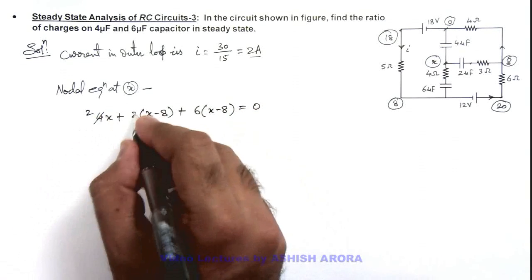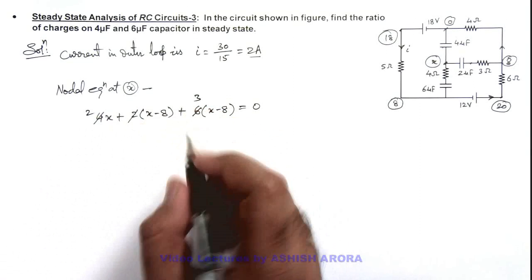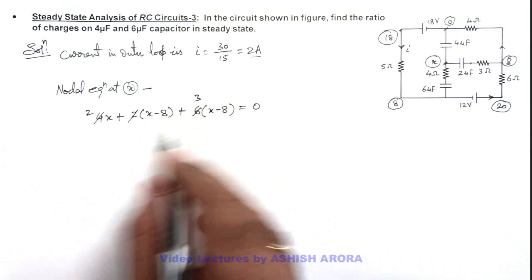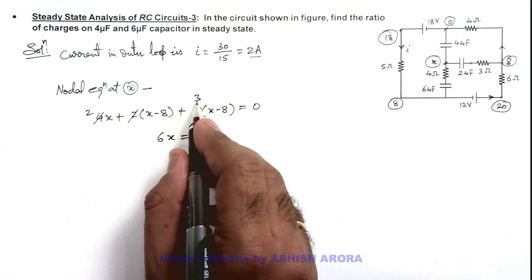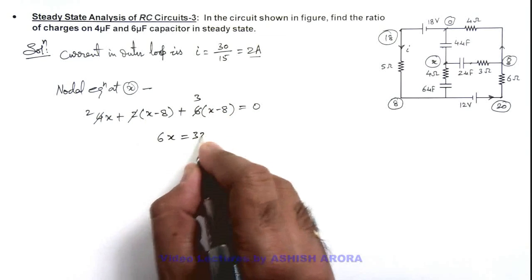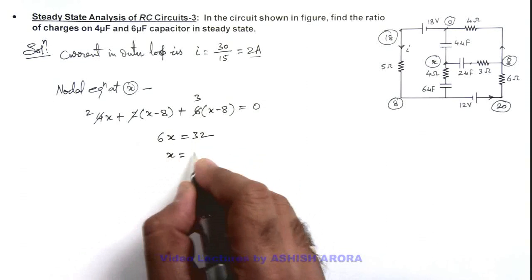Here this gets cancelled out with 2. So we are getting 2 plus 1, 3 plus 3, 6x is equal to 8 multiplied by 3, 24 plus 8 is 32. So the value of x will be 32 by 6 that is 16 by 3 volt.